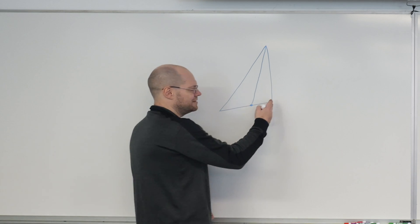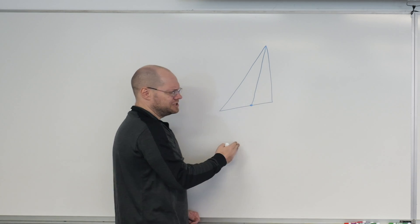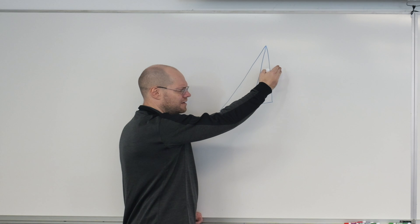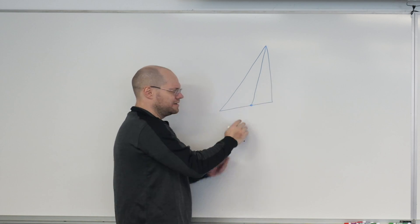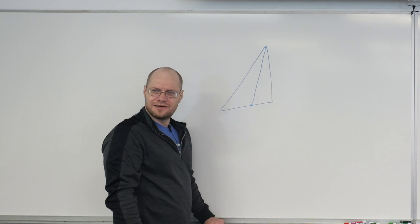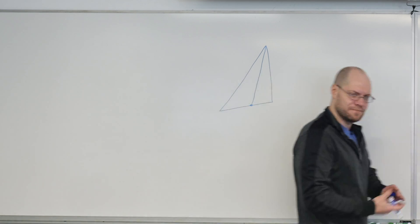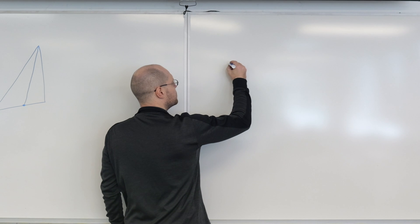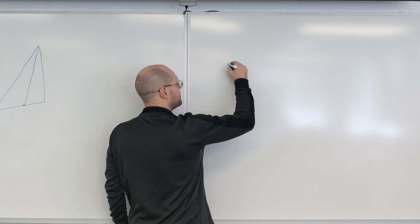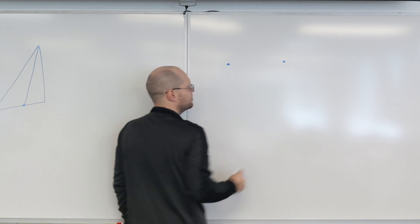The geometric proof is quite ingenious — you construct an additional parallel line, find similar triangles, and it's elegant but requires ingenuity. Let me remind you what we learned about straight lines and how they are represented by vector algebra.